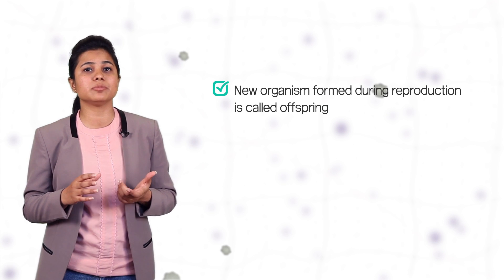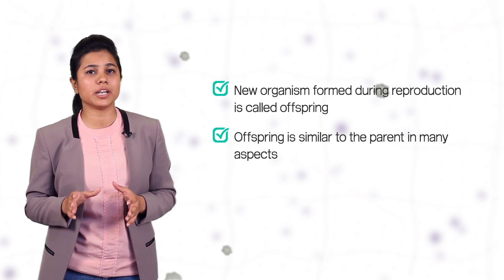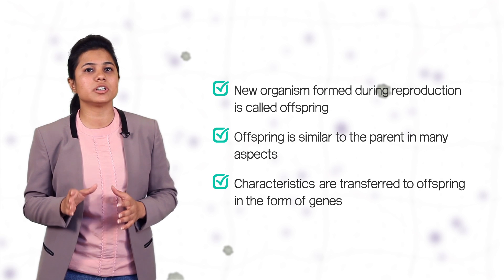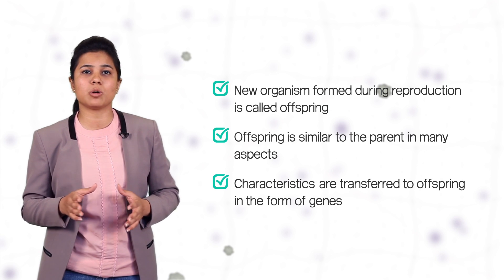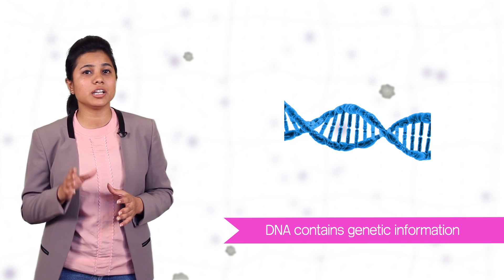Now, reproduction involves creation of new individuals from parent organisms. In all types of reproduction, we generally see that the new organism formed also called as offspring is similar to the parent in many aspects. The characteristics of the parents are transferred to the offspring in the form of genes. The materials which carries the genetic information is DNA or deoxyribonucleic acid contained in chromosomes present in the nucleus of the cell.